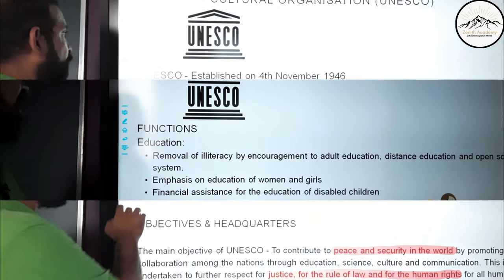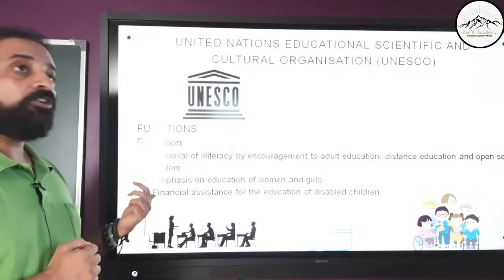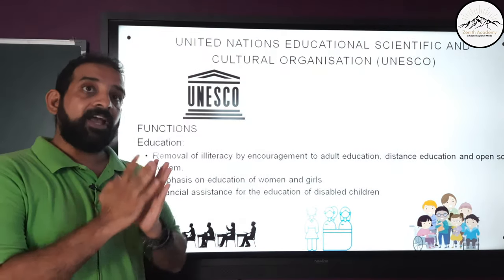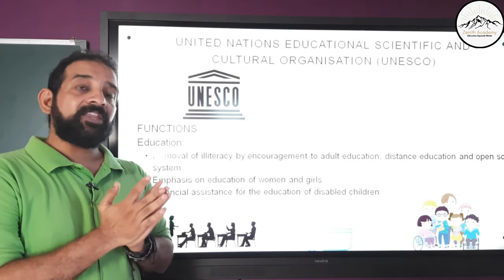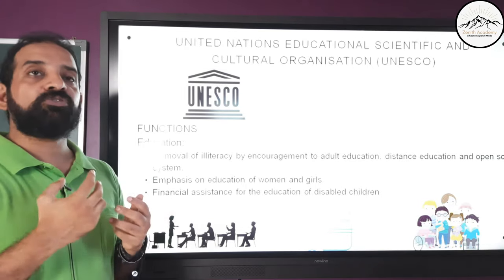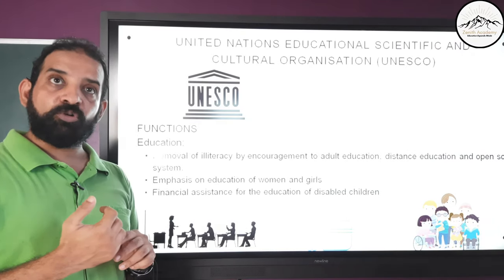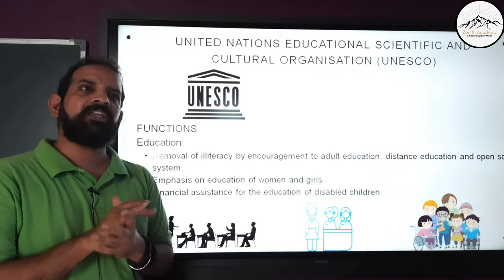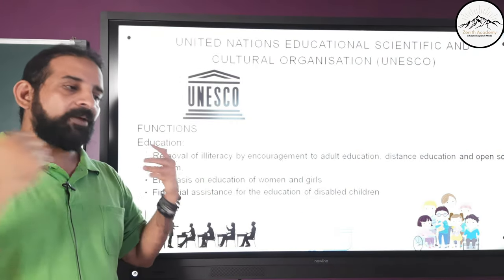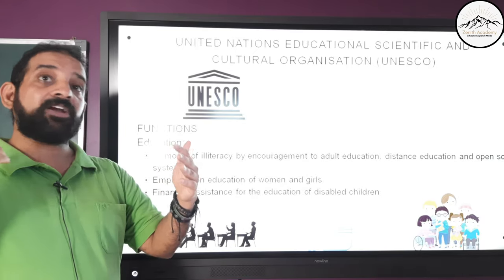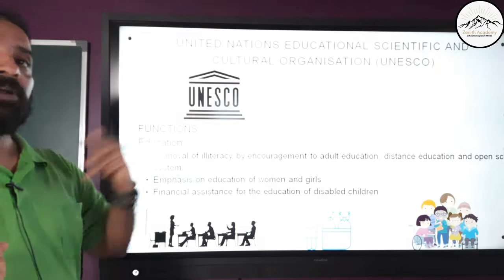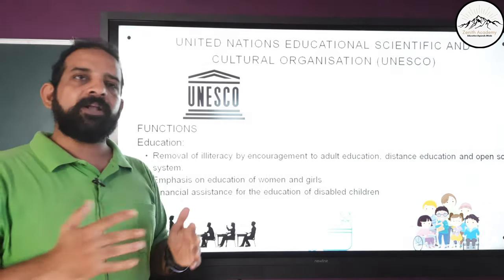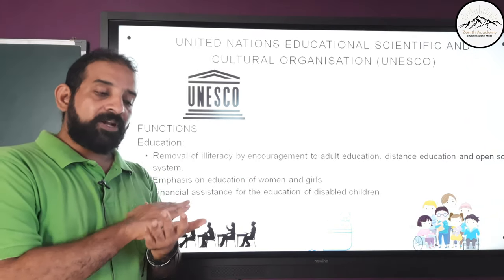Let's look at the functions of UNESCO. First is education — removal of illiteracy through adult education, distance education, and the open school system. Adult education addresses the many illiterate adults across countries. Distance education uses communication tools to impart education where it cannot be delivered physically. The open school system allows people of all age groups to come together and learn.